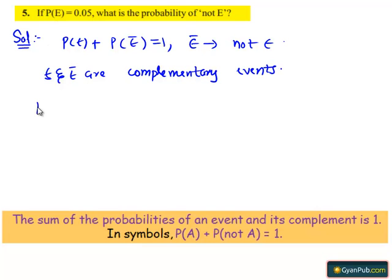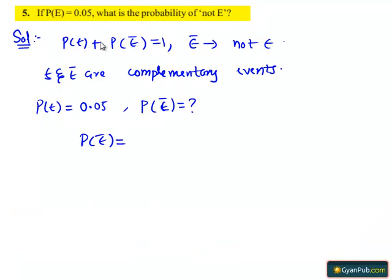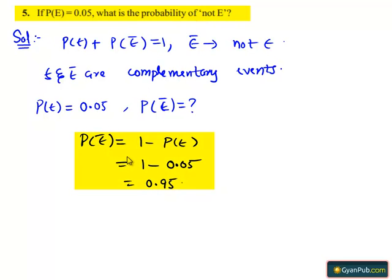In the question, it is given that P of E equals 0.05 and we need to find the probability of not E, that is P of E bar. From this, we can write P of E bar equals 1 minus P of E, which is 1 minus 0.05, that is 0.95. Therefore, the probability of not E, that is P of E bar, equals 0.95.